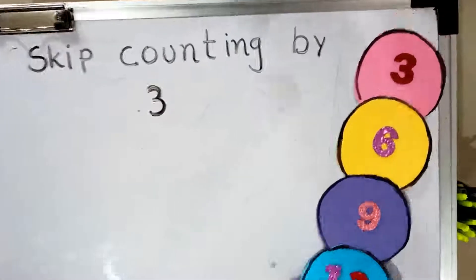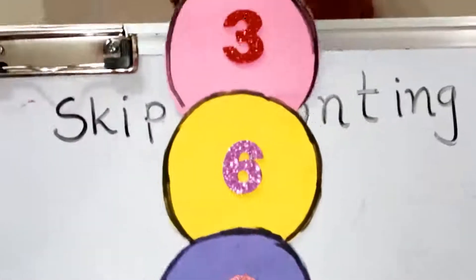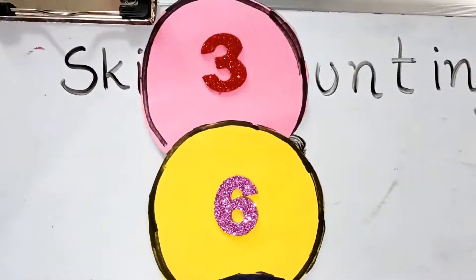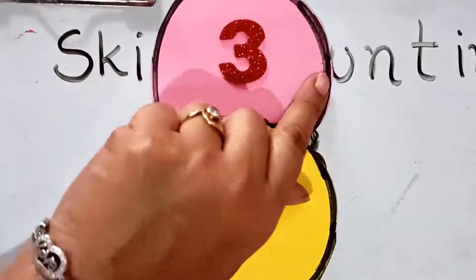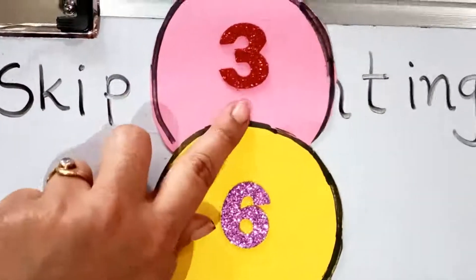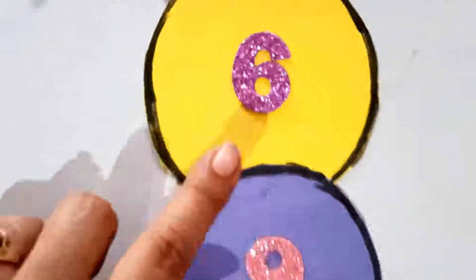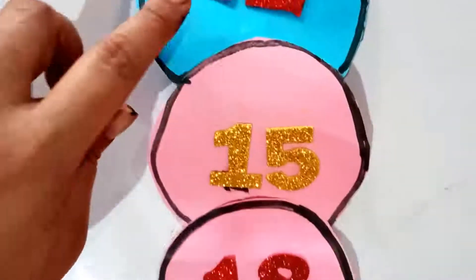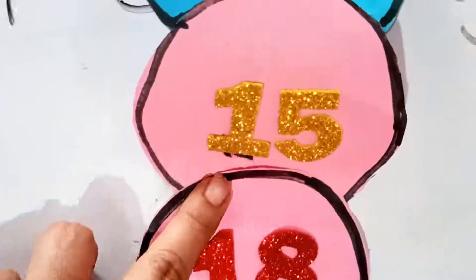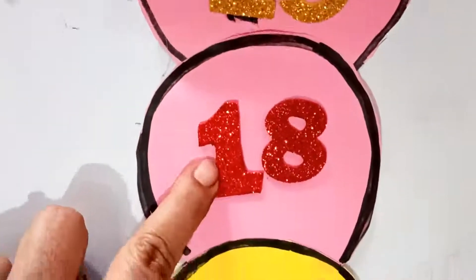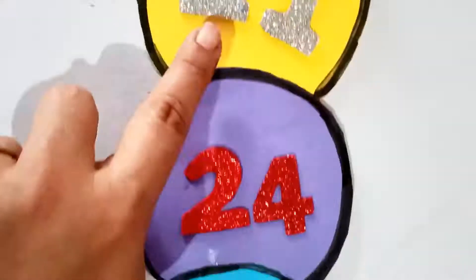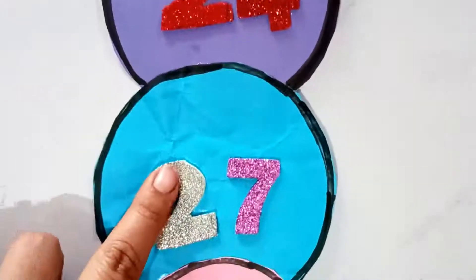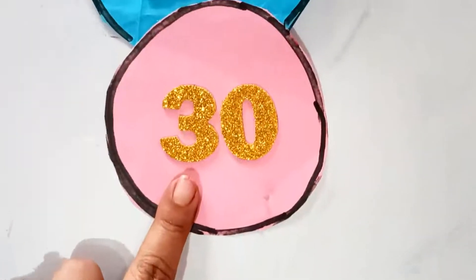First I will show you the numbers. These are the numbers: 3, 6, 9, 12, 15, 18, 21, 24, 27, and 30.